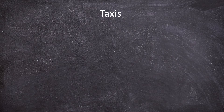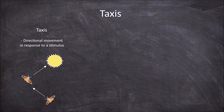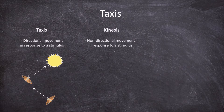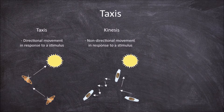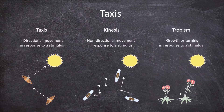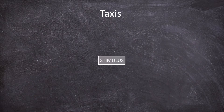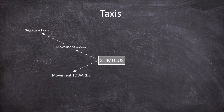In this video we're going to look at the form of animal movement known as taxis. Taxis is the directional movement of an organism in response to a stimulus. It differs from kinesis, which is a non-directional movement in response to a stimulus, and from a tropism, which is the growth or turning of an organism in response to a stimulus. In taxis, this directional movement is innate and can be away from a stimulus, which is a negative taxis, or towards a stimulus, which is a positive taxis.